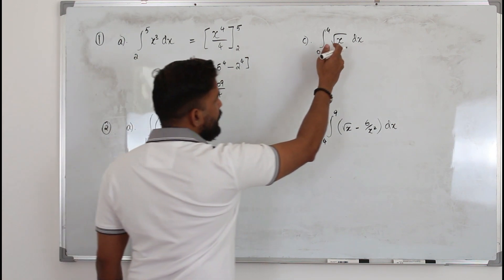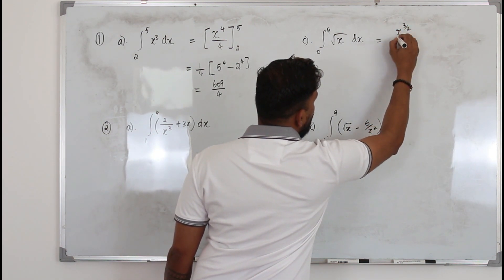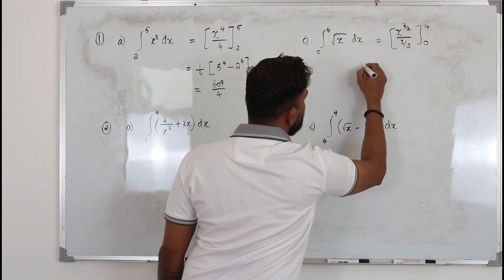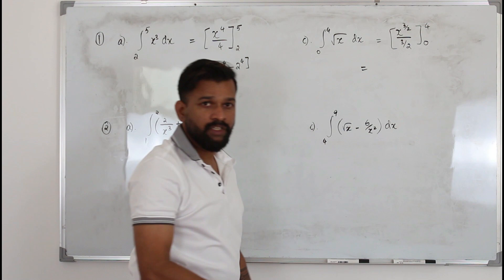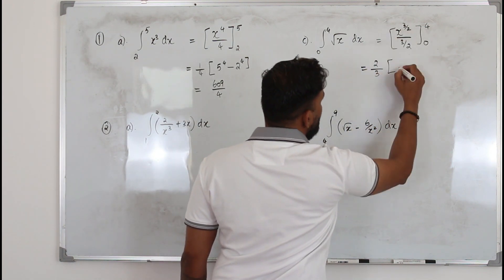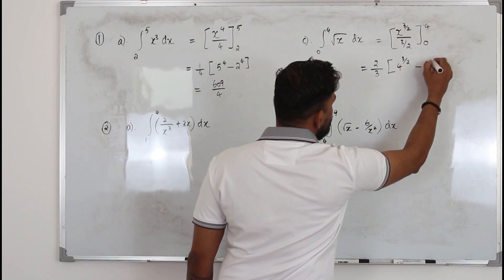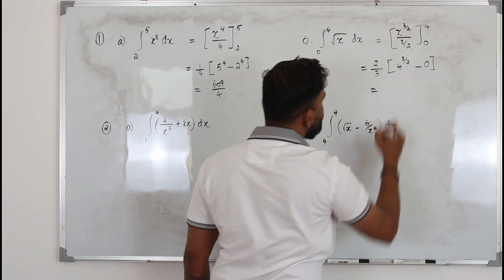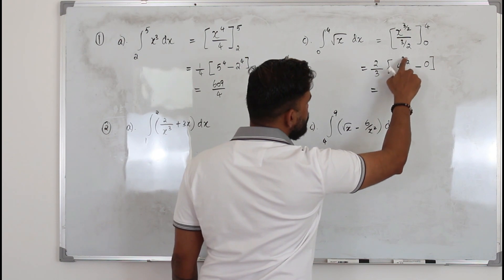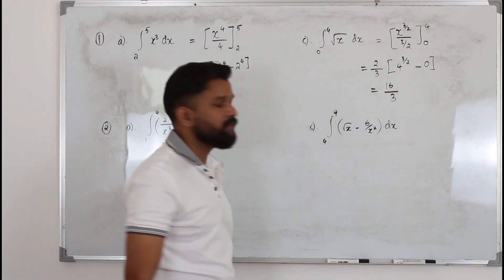Here when you integrate x power half, you get x power half plus 1 over half plus 1, and the limit is 0 to 4. You have a fraction in the denominator, so put it as a reciprocal: 2 over 3. Replace x by the upper limit: 4 power 3 by 2, minus x by the lower limit, 0. When you find the value of 4 power 3 by 2, it's 2 squared, so 2 will be cancelled. 2 cubed is 8. 8 times 2 is 16 over 3. That's the answer.